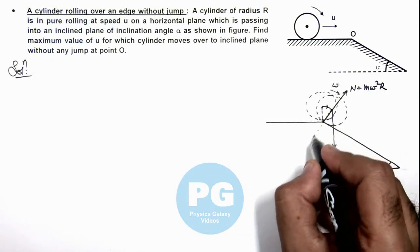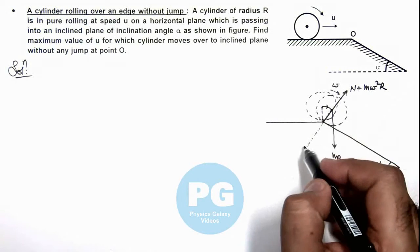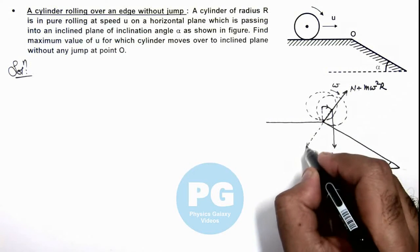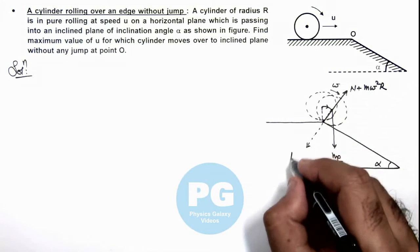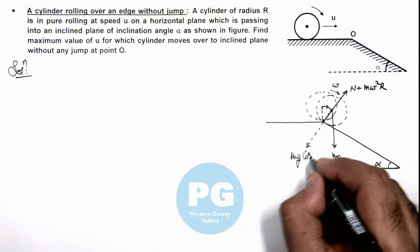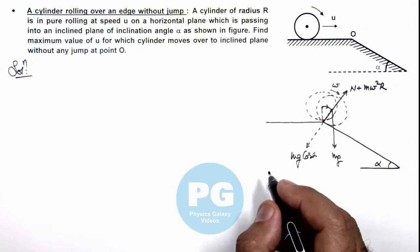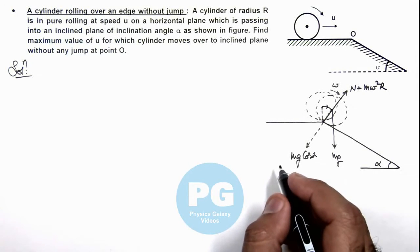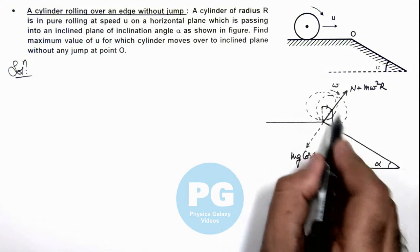And along the line of normal reaction, the component of weight is mg cos alpha. Now in this situation, here we can say when the cylinder rotates about point O, then we can write: